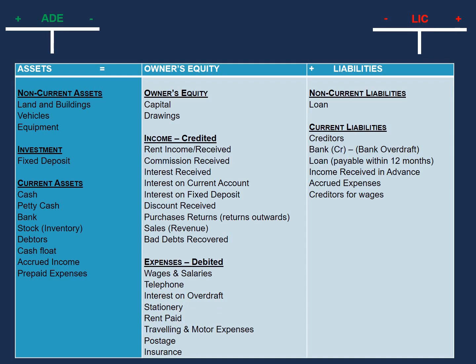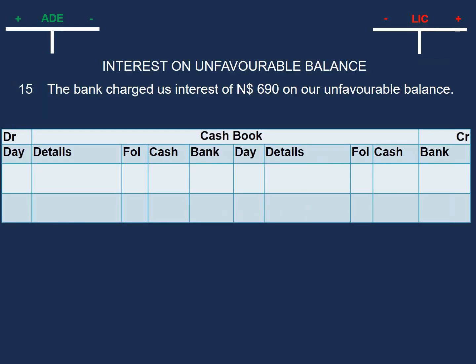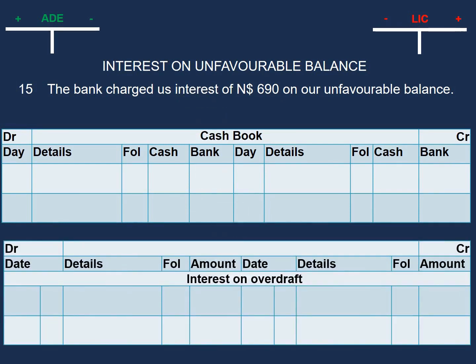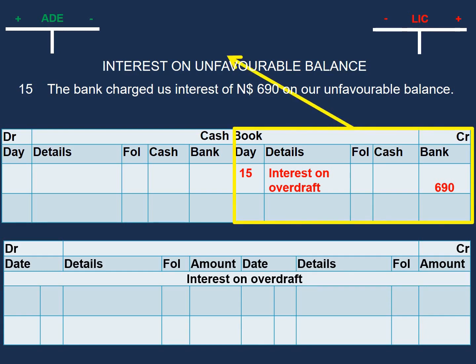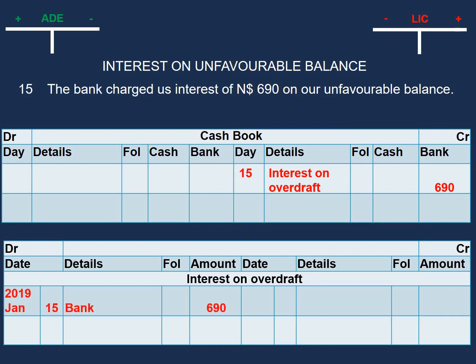To process this transaction, first we need to open our interest on overdraft account. Then we would credit our cash book with $690, entered in the bank column, with the description 'interest on overdraft' in the details column. Since we are crediting the cash book, this means we are paying out money. Then we would debit our interest on overdraft account with $690, with the description 'bank' in the details column. This completes the double entry process.